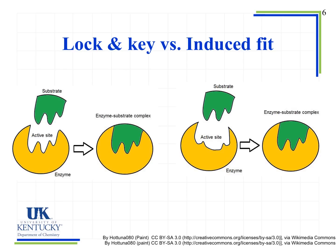Some enzymes have different types of fit. The first is the lock-and-key model, where the substrate has a shape that exactly matches the shape of the active site — like a hand to a fitted glove. The second is the induced fit model, where the enzyme's active site is close to but not exactly the shape of the substrate. Both form an enzyme-substrate complex, but the active site shapes look different between the two models.